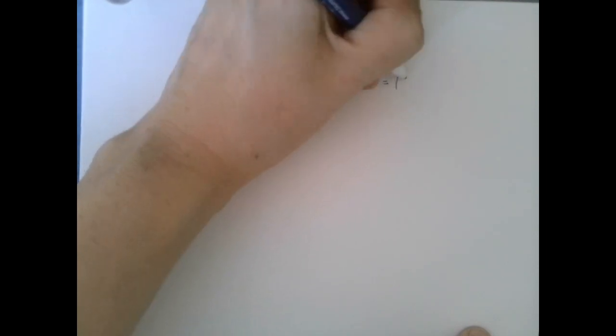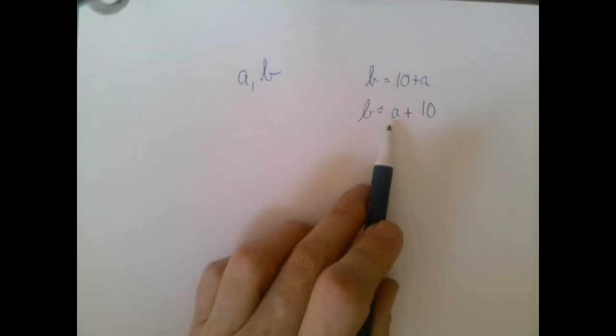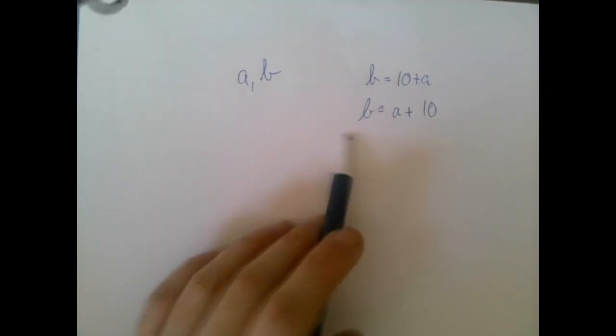Let's say a and b, and one of them is 10 greater than the other. Then if you label those two numbers with a and b, then b can be written as a plus 10. Then b is 10 greater than a, right?